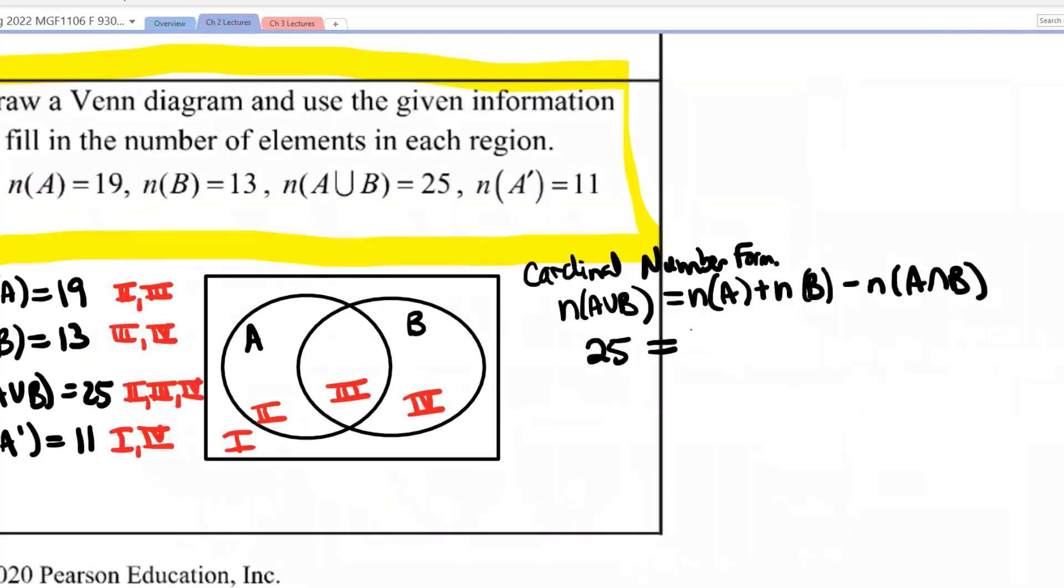We know the number in A union B is 25. The number in A is 19, and the number in B is 13. We just don't know the number in A intersect B. So if 25 is equal to 32 minus the number in A intersect B, how many must be in A intersect B?